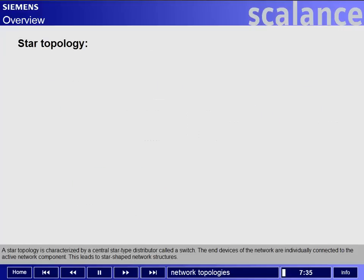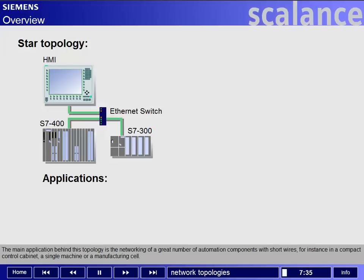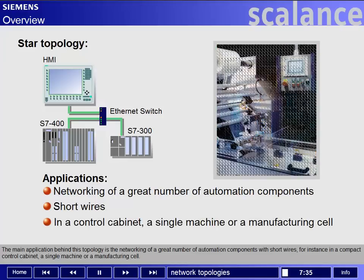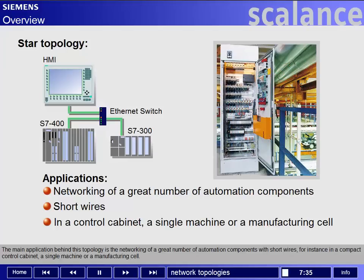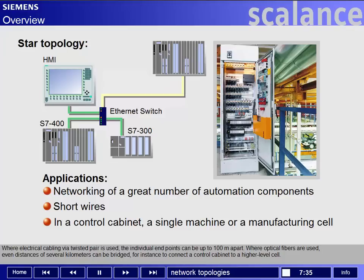A star topology is characterized by a central star-type distributor called a switch. The end devices of the network are individually connected to the active network component, leading to star-shaped network structures. The main application behind this topology is the networking of a great number of automation components with short wires — for instance, in a compact control cabinet, a single machine, or a manufacturing cell. Where electrical cabling via twisted pair is used, the individual end points can be up to 100 meters apart. Where optical fibers are used, even distances of several kilometers can be bridged — for instance, to connect a control cabinet to a higher-level cell.